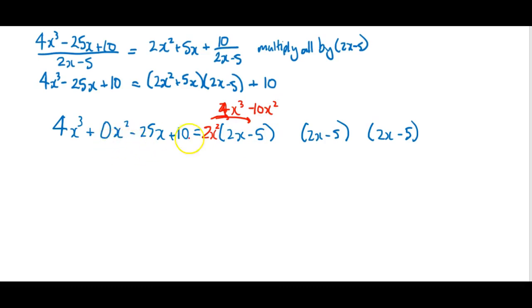Now over here I have 0x². So what I'm looking for is something to put in front of this next bracket. So that it will collect with minus 10x² to give 0x². So that will have to be a positive 5x.